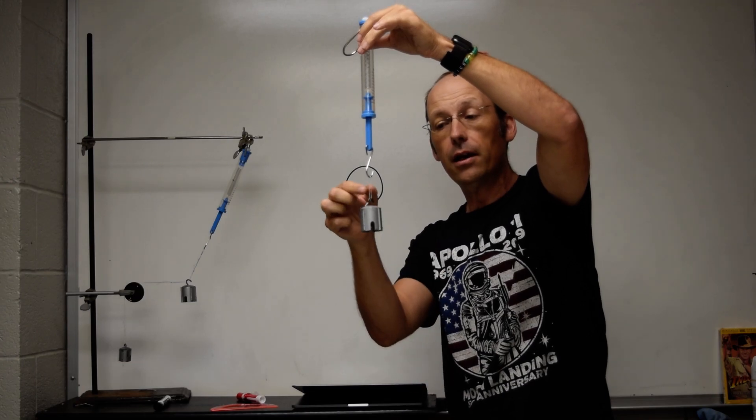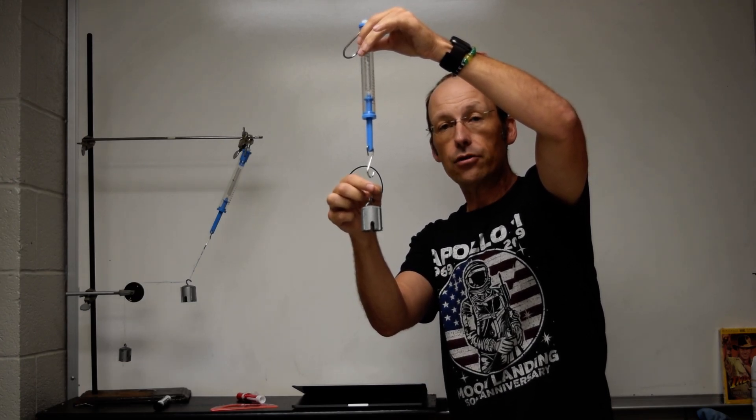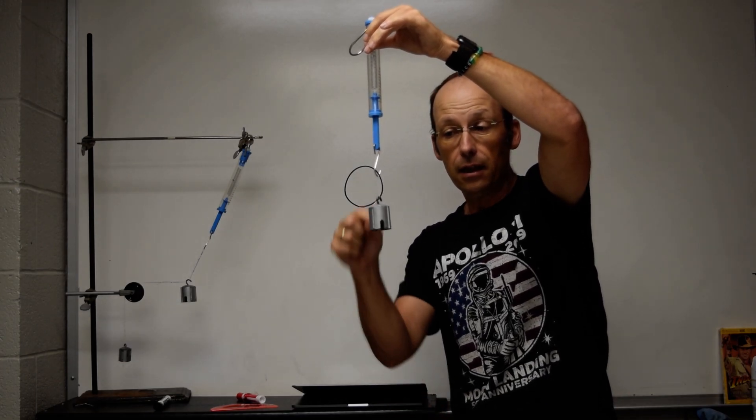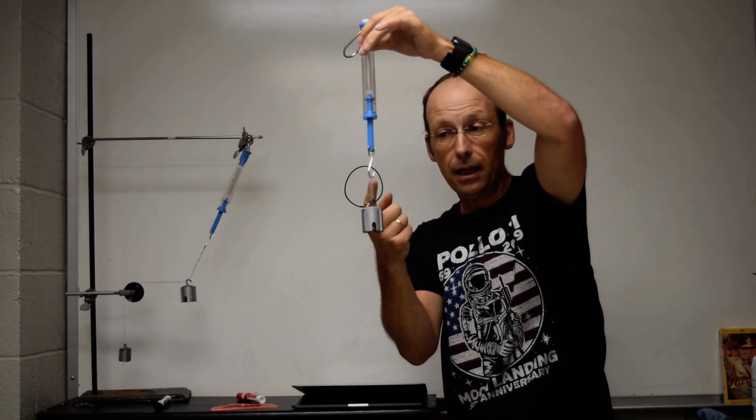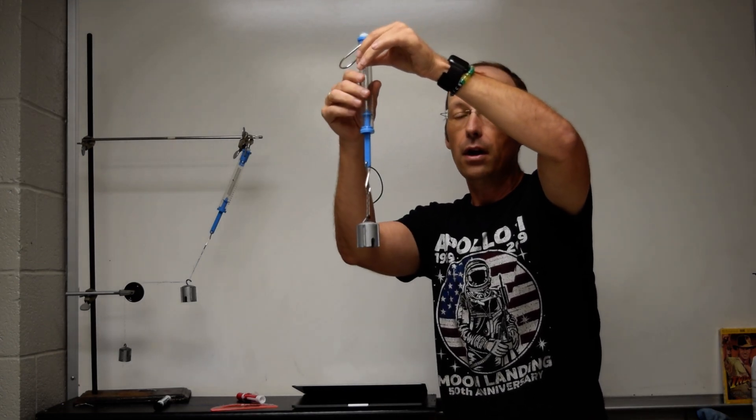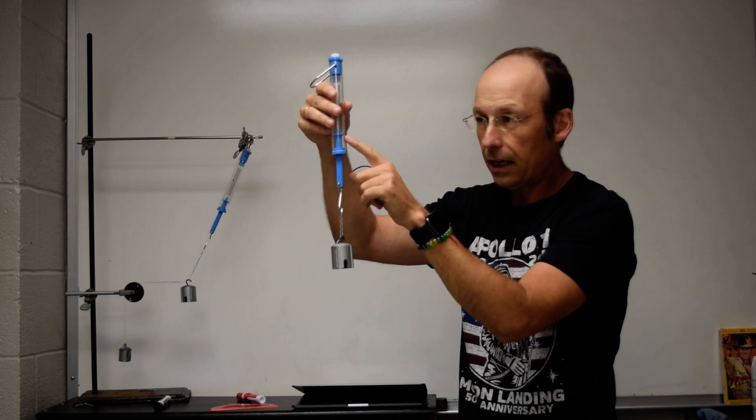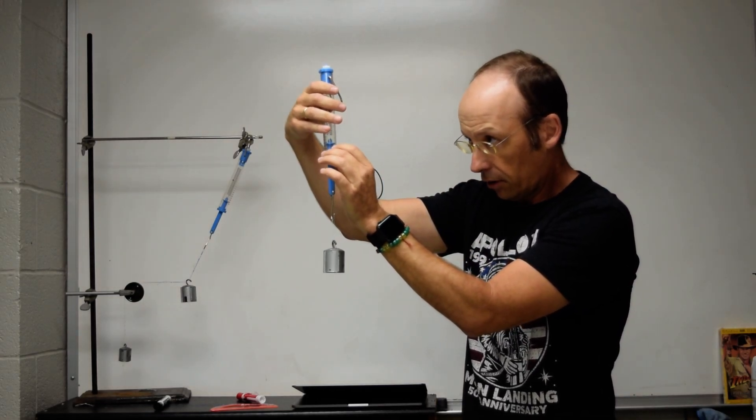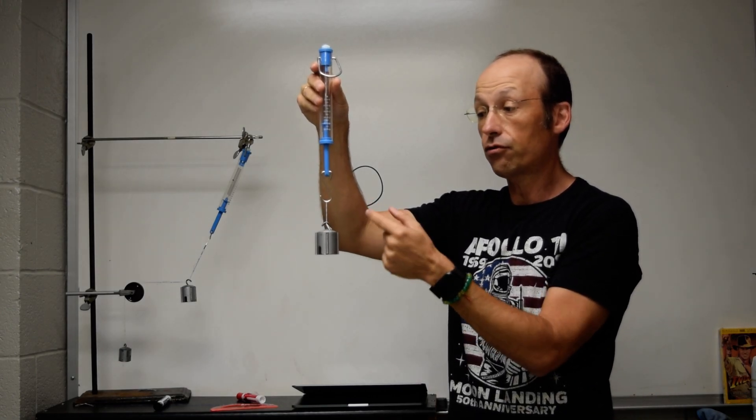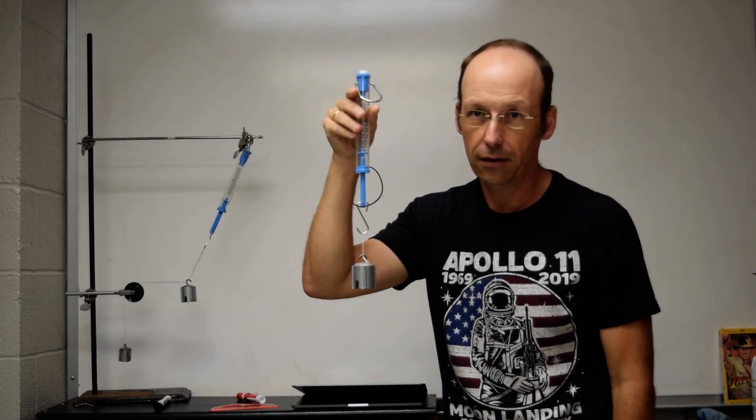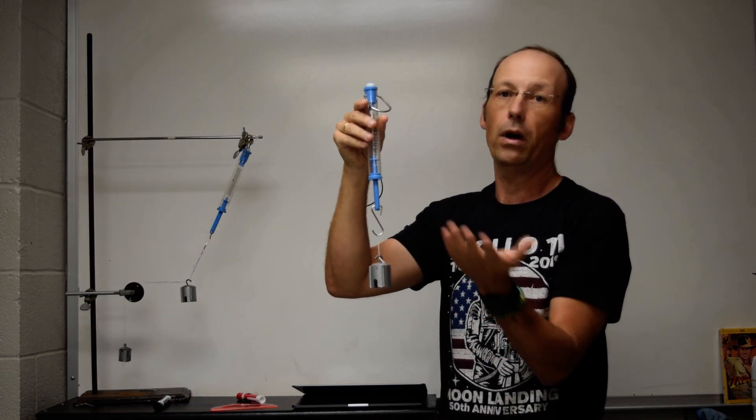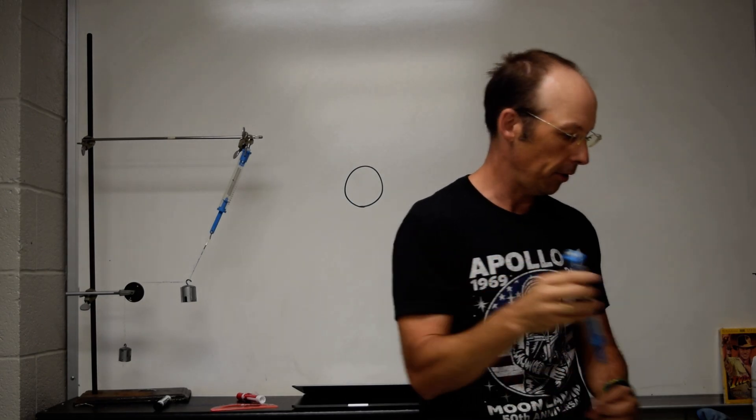But the important point here is that I can measure the tension of the string. The string also is at rest. Since the string is at rest, then the downward pull from the mass and the upward pull from the spring have to be equal in magnitude. So I can read the force on here that says right under two Newtons. And that tells me the force of the string, even though it's not actually the string. So I can use that as a way to measure the tension of the string.